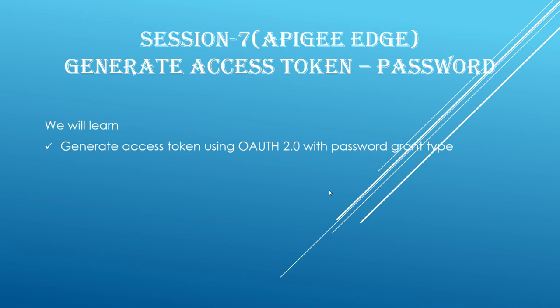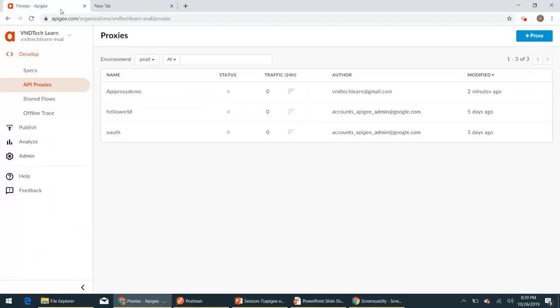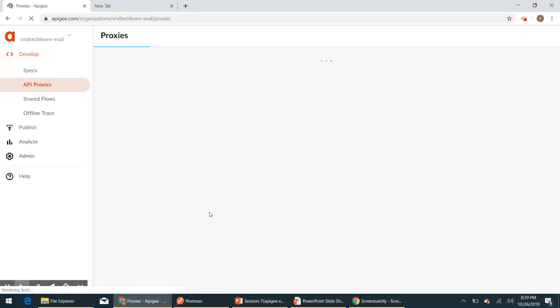One of the most commonly used grant types is the password grant type. In this session we will generate an access token based on password grant type. As you might have guessed, we need to pass username and password along with the grant type in order to generate an access token.